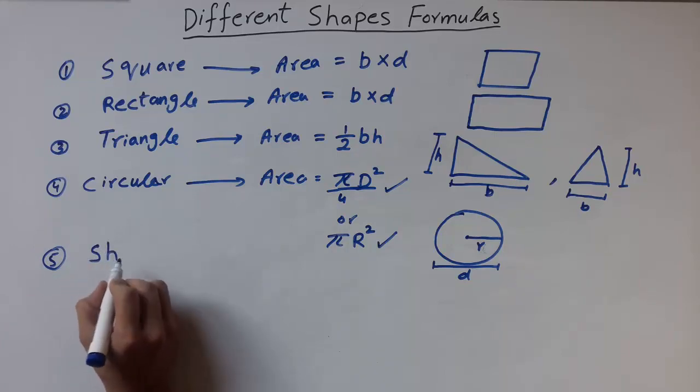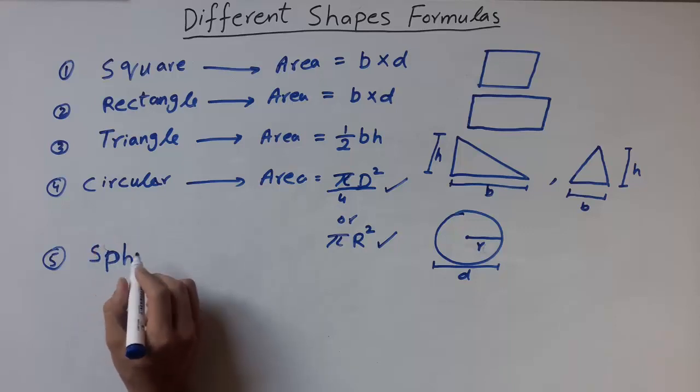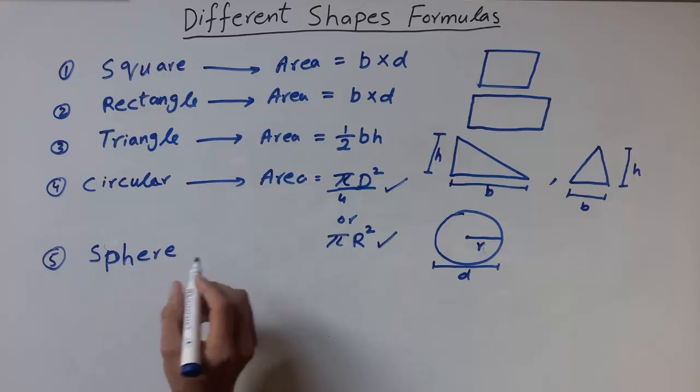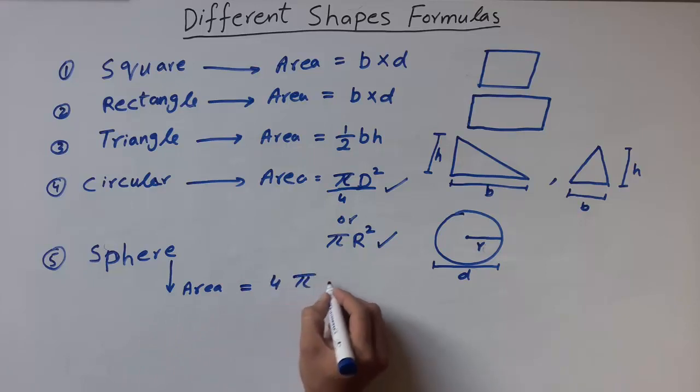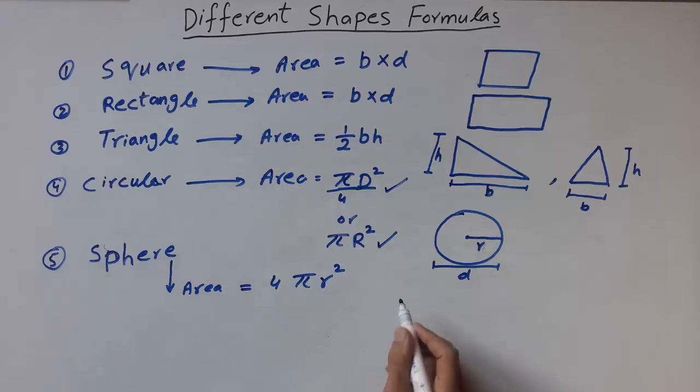The fifth one is sphere. Area of sphere is equal to 4 pi R square. Sphere is basically a circle having three dimensions.